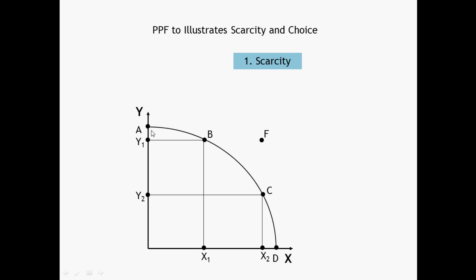We know along the production possibility frontier all the resources are fully and efficiently used. Such a point is B. Now if we want to move from B to F, we have to produce X1 X2 amount of additional X, which is not possible because of limitation of resources.